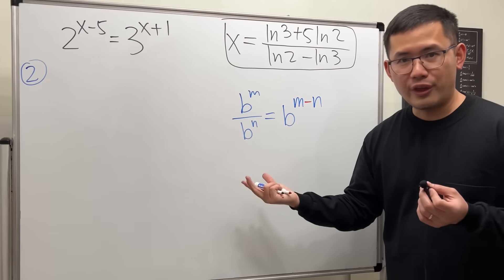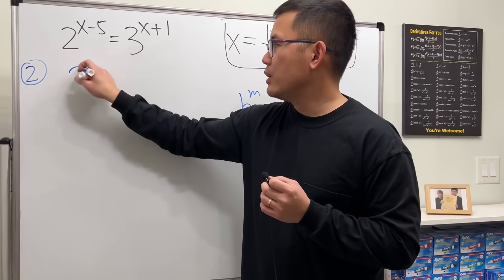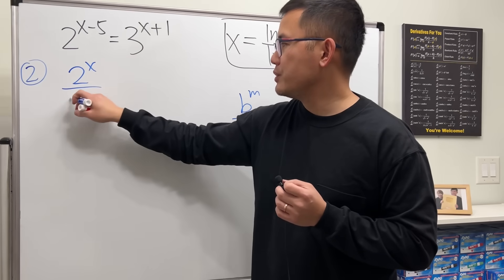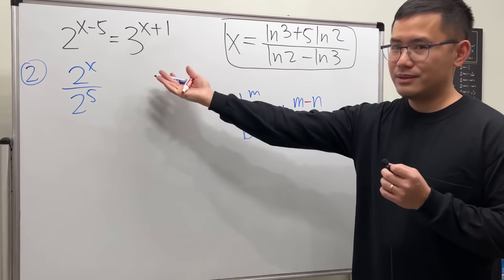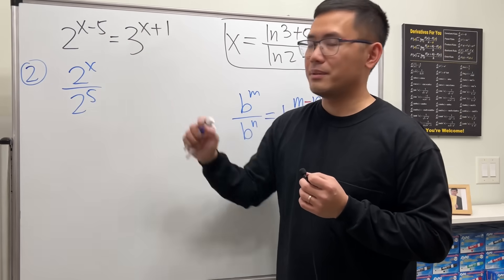Now, can we look at it backwards? Sure thing. So for this right here, we can look at it as 2 to the x over 2 to the 5. x minus 5. So x on the top here, 5 on the bottom.